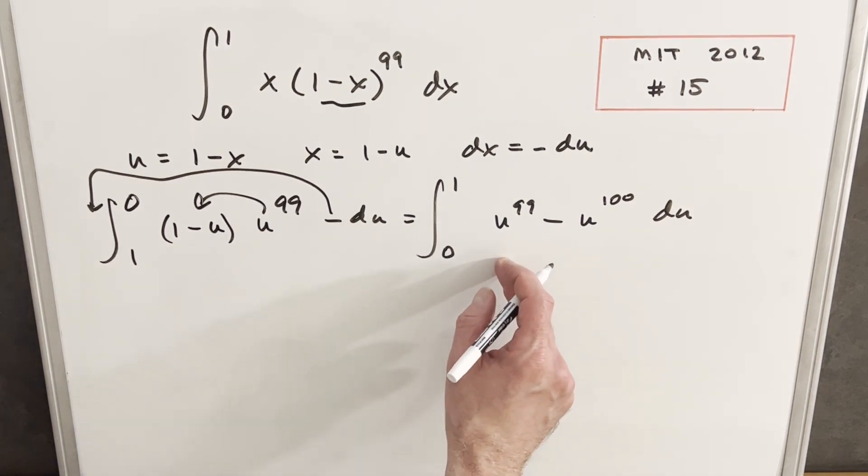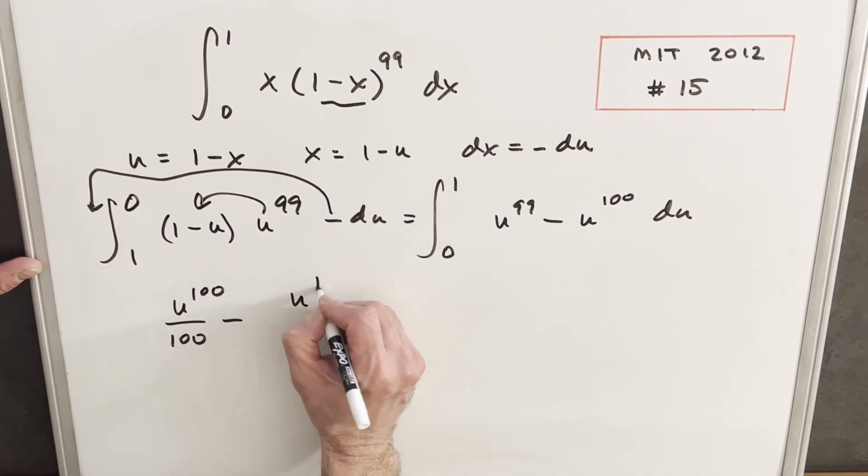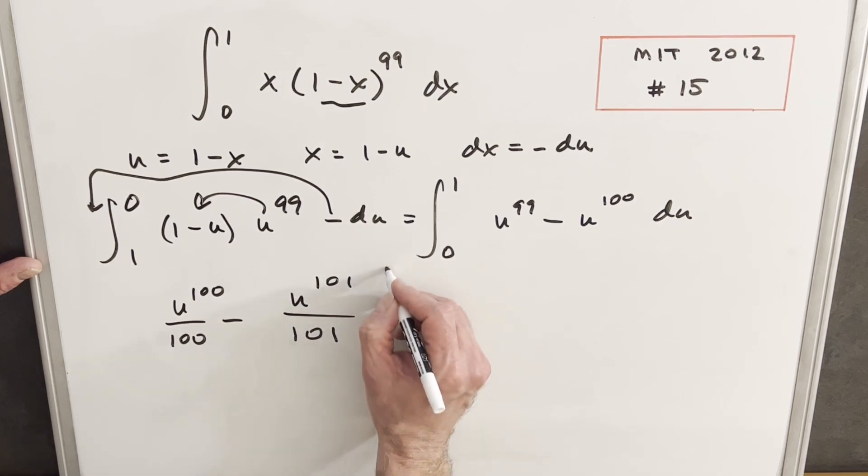Here we're set up perfectly for just the power rule. So u to the 99, we'll write this as u to the 100 over 100 minus power on this one is going to be u to the 101 over 101, just evaluated from 0 to 1.